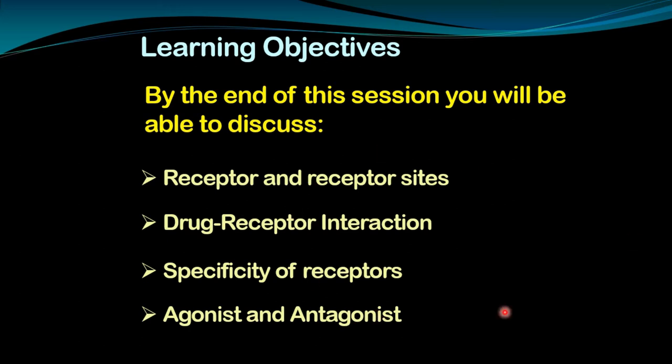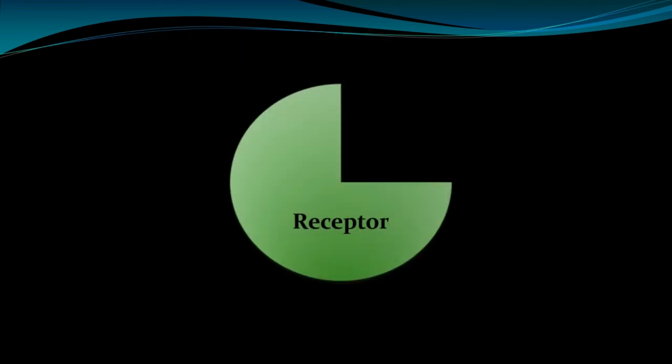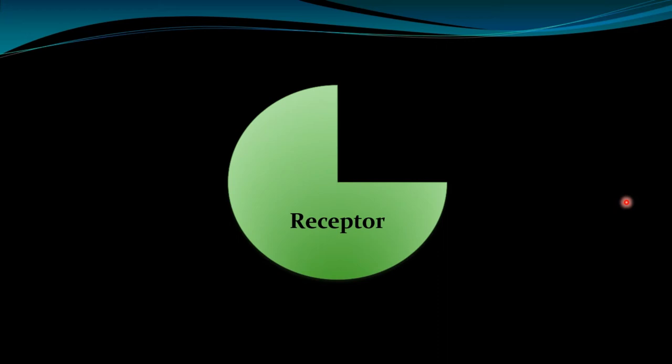Our final objective is to discuss the agonist and antagonist — what are agonists, what are antagonists, and how they produce the effect. So these are our four learning objectives of today's session. A receptor is the component of a cell which interacts with the drug and initiates or creates a sequence of biochemical events, and these biochemical events finally lead to the pharmacological effect.